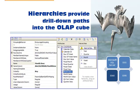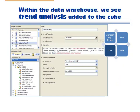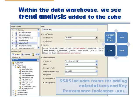That's online analytical processing, OLAP. Our OLAP cube is great for trend analysis, like labor hours for prior month versus current month. That's a key performance indicator for analyzing cost trends.